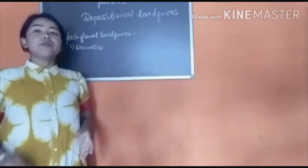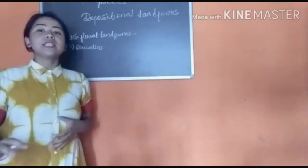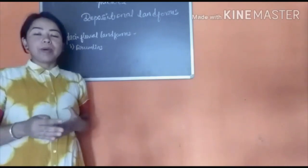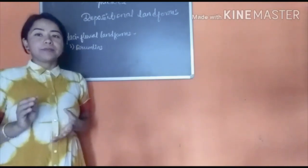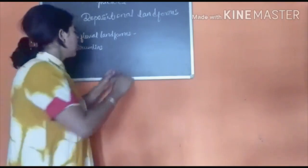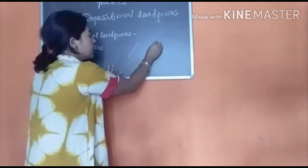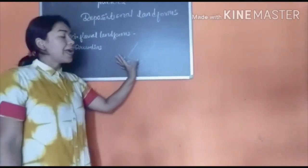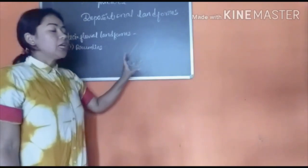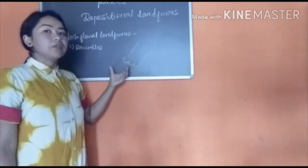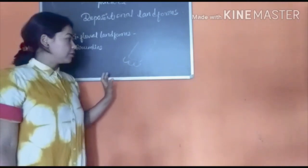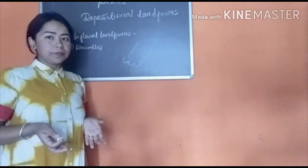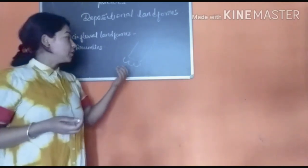Drumlins are small elongated hills formed when terminal moraines are washed by ice. As we already discussed, we have the terminal moraine — this is the end of the glacier, beyond which there is no more glacier, only rivers or small streams. The terminal moraine is made up of large boulders of rock that come together to form it.